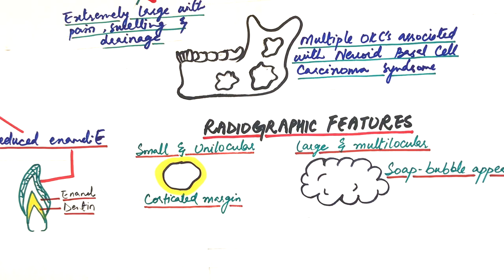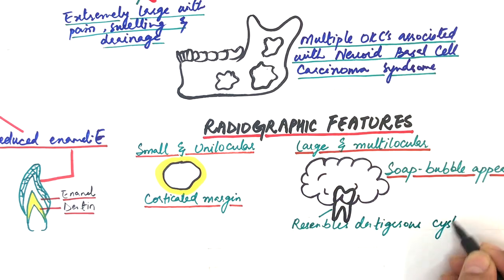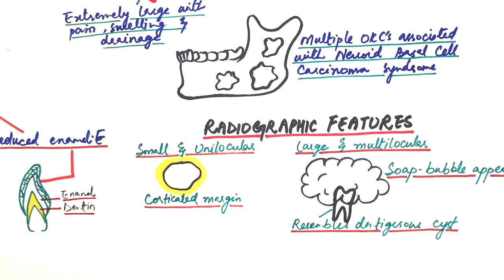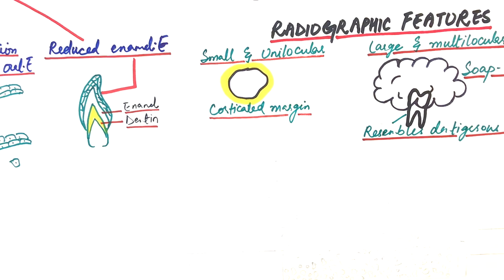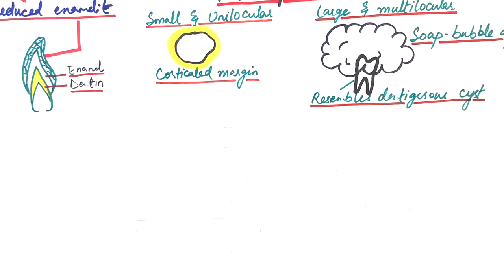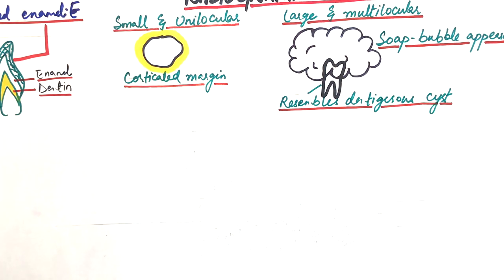In about 25 to 40% of cases, an unerupted tooth is associated with the cyst, thereby resembling a dentigerous cyst. However, there may be even a missing tooth within the jaw, and this is indicative of origination of the cyst from the dental lamina of that particular missing tooth.